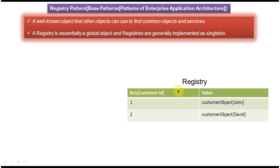The registry will look like this. The registry is always like a key-value pair, and here the customer object is a common service which other objects will use for their business logic. The key is customer ID and the value is the customer object. The registry has two customer objects: one customer object represents John's information, and the second customer object represents David's information.